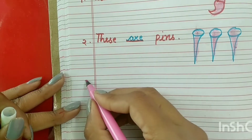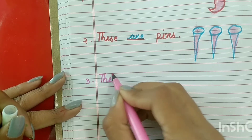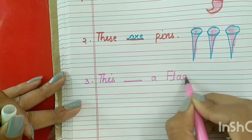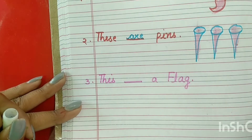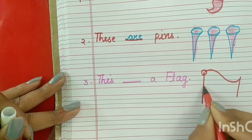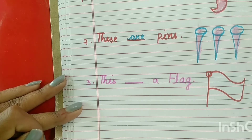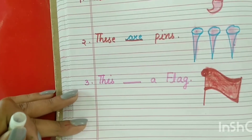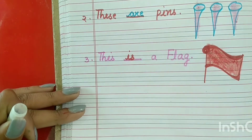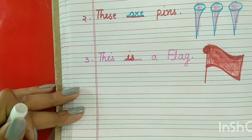Now make point number three. This — T-H-I-S — dash a flag. F-L-A-G. So we will draw one flag here like this. Draw one flag and fill the color also. This is a flag. What will come here? 'Is.' Because there is only one flag.